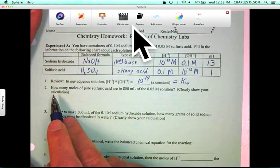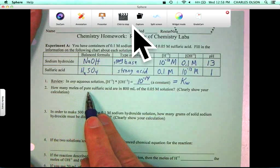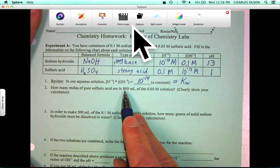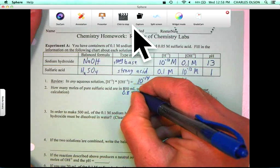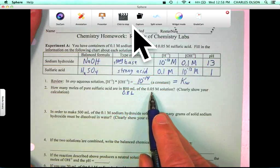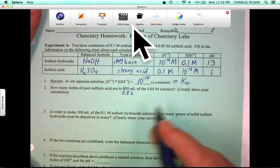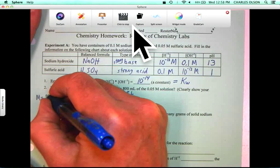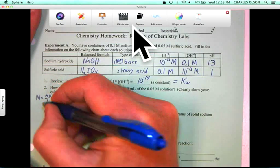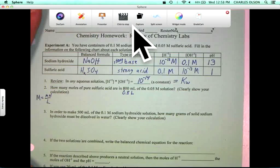Now, how many moles of pure sulfuric acid are in 800 mils or 0.8 liters of our 0.05 molar solution?